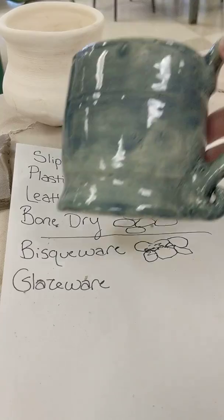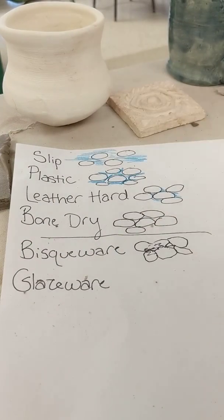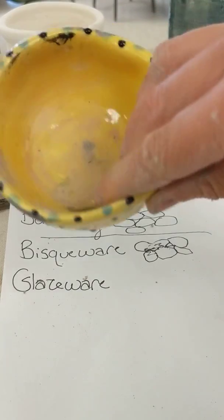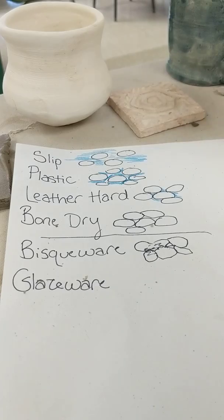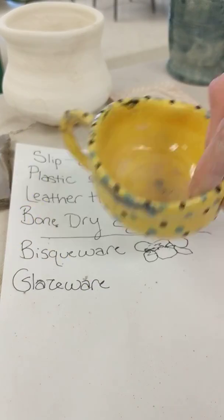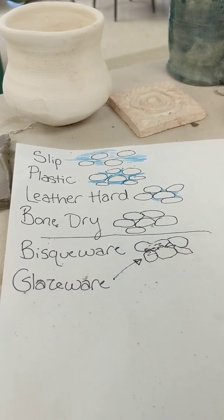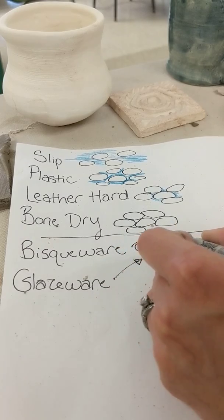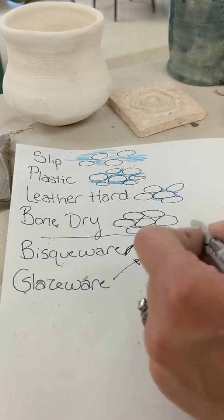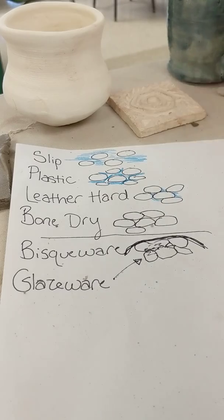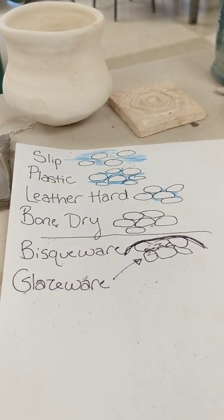Last one on the list is glazeware. This is when you add the coloring to it. The coloring adds a glaze — a glass on the surface. It's shiny, it's sturdy, and now it's not a porous surface. It's the same as the bisqueware, except now there's a nice layer of glaze over the top. This protects it so that you can put coffee in a mug and it won't go through. So those are the stages. Hope you enjoy.